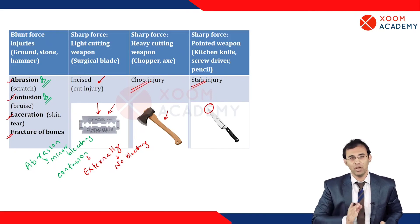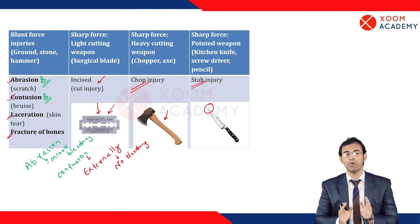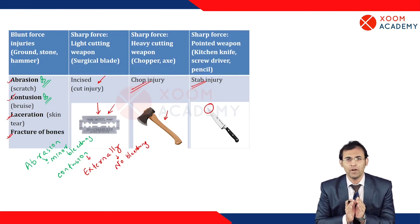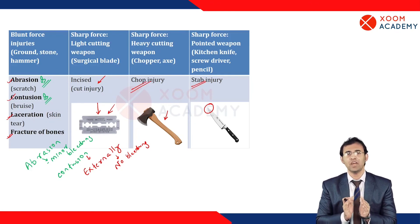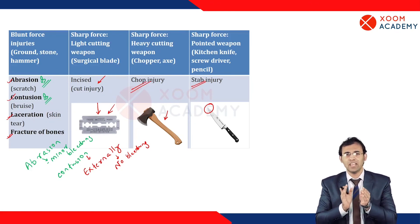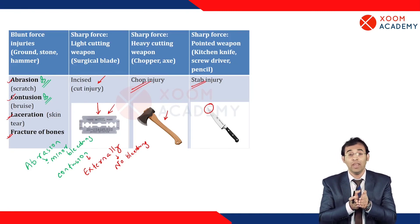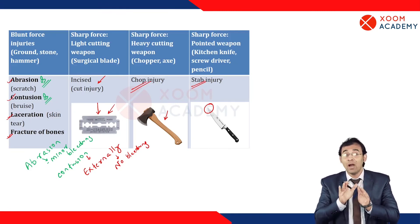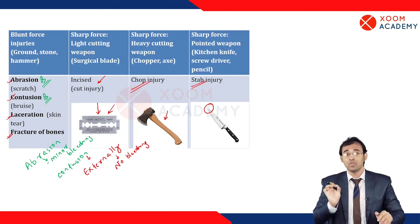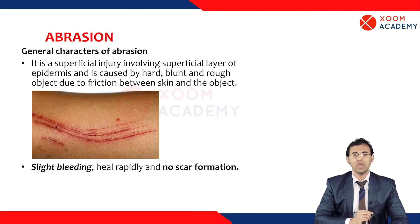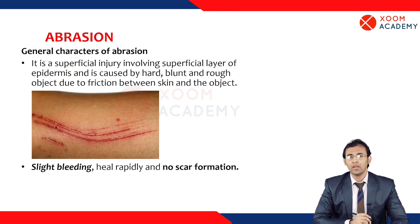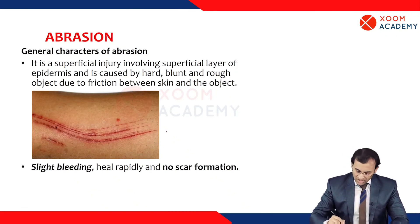We are going to discuss each one by one — first all types of blunt trauma like abrasion, contusion, and laceration. After that, we will differentiate laceration from incision, since both can involve rupture of skin and subcutaneous tissue. So let's start from the basics and first learn about abrasion.